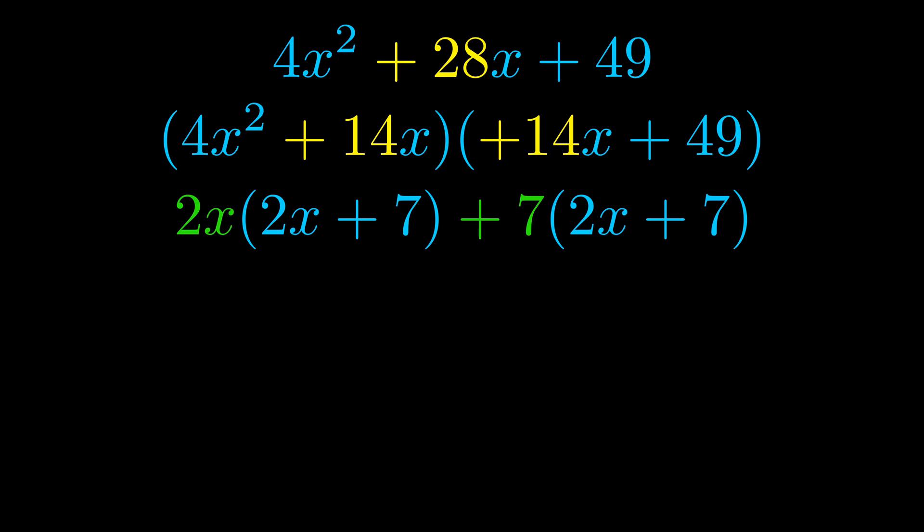Notice also how what remains inside of the parentheses is the same in both cases. The blue values are the same. Those blue values will become one of our factors, and we will combine the two green values, the GCFs that we pulled out, to get the other one. And that is our fully factored equation.